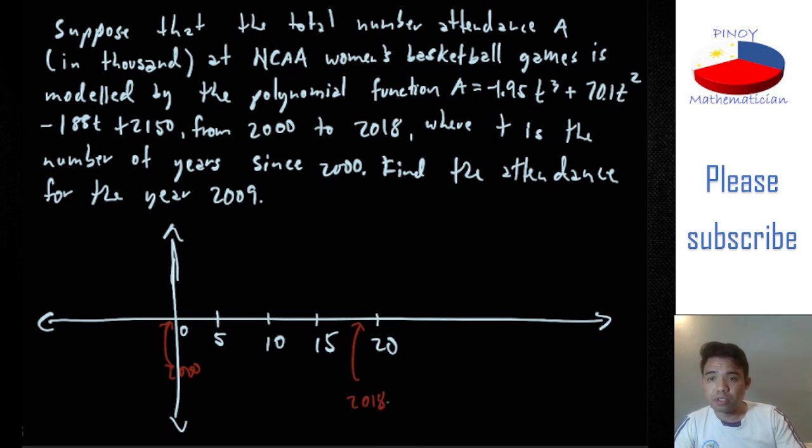Okay, so because the T is the number of years since 2000. So that means this T equals 5, it is 2005, and T equals 10 is 2010, and so on. So it's asking for, that ends up for the year 2009.